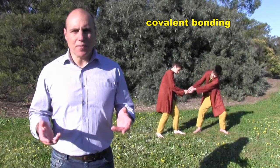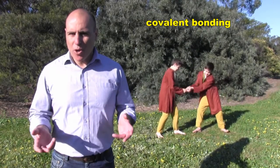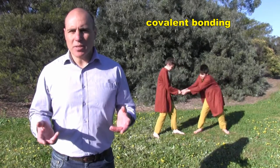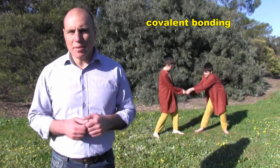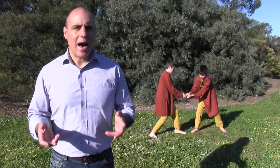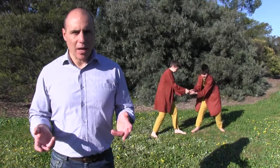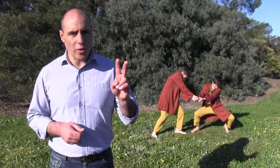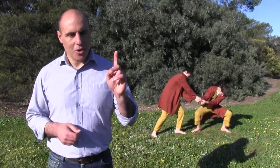It's a bit like two hobbits fighting over a ring. They both want it, and neither wants to let go. So the two hobbits are bound together by their mutual attraction to the ring. However, unlike a fight over the one ring, the tug of war between the two atoms nearly always involves two rings - er, two electrons - one from each atom.